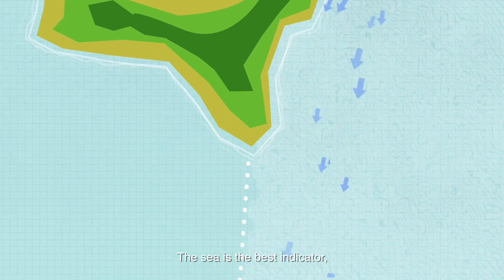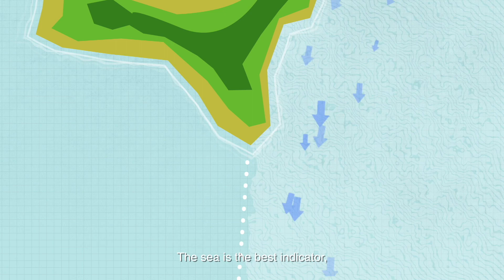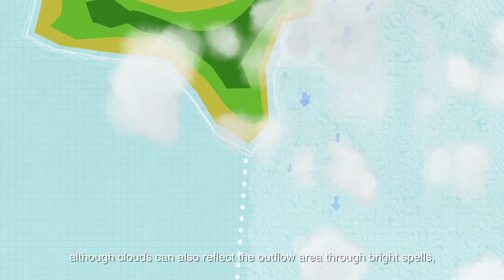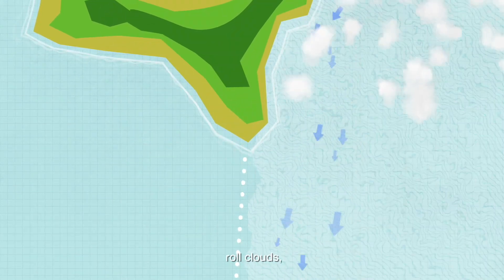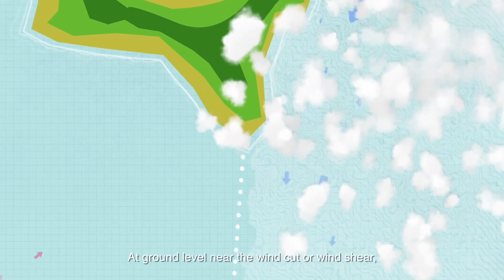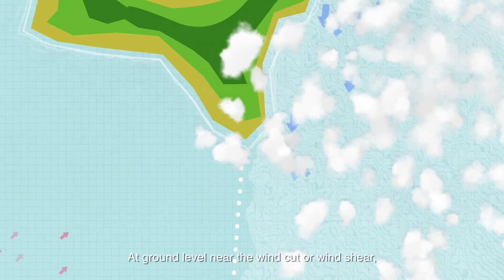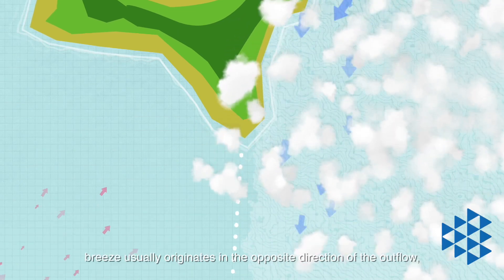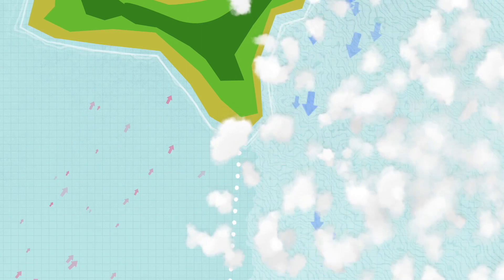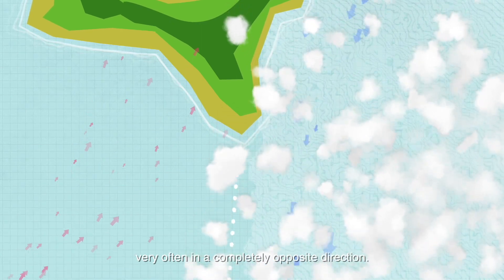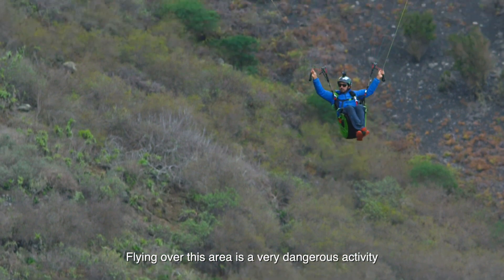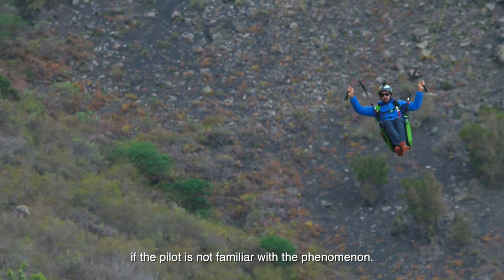The sea is the best indicator, although clouds can also reflect the outflow area through bright spells, roll clouds, and broken and scattered clouds at ground level. Near the wind cut or wind shear, the breeze usually originates in the opposite direction of the outflow — very often in the completely opposite direction. Flying over this area is a very dangerous activity if the pilot is not familiar with the phenomenon.